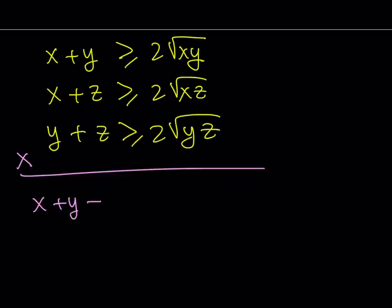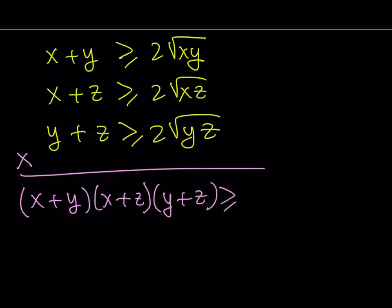And when we do, I'm supposed to write the two-way sums. So I get x plus y multiplied by x plus z multiplied by y plus z. And if I go ahead and multiply the right-hand side, 2 times 2 times 2 is going to give me 8. And let's go ahead and multiply these expressions together.